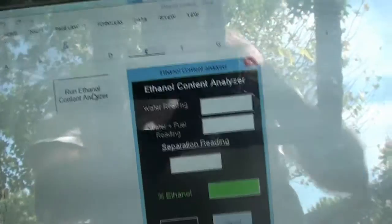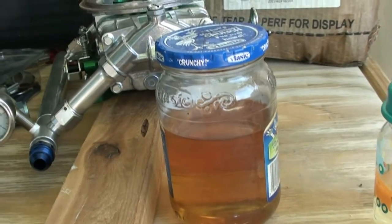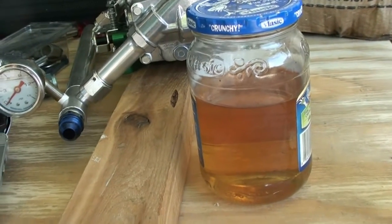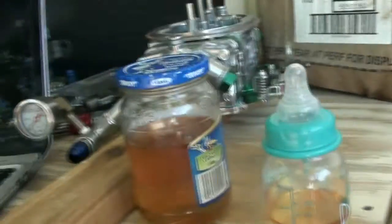So all you do is take your little dollar baby bottle, first pull some gas out of your boat. So this is my little glass jar, got some E85 in it right out of my boat. And then pick a marking, any marking.